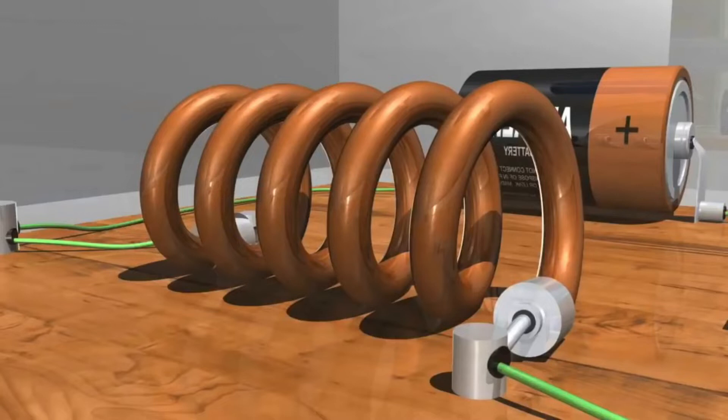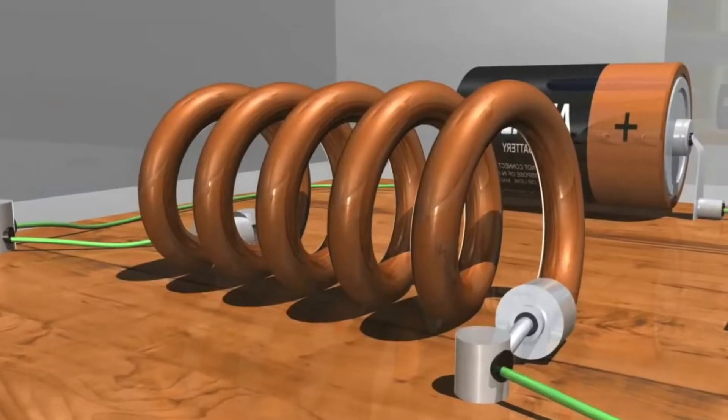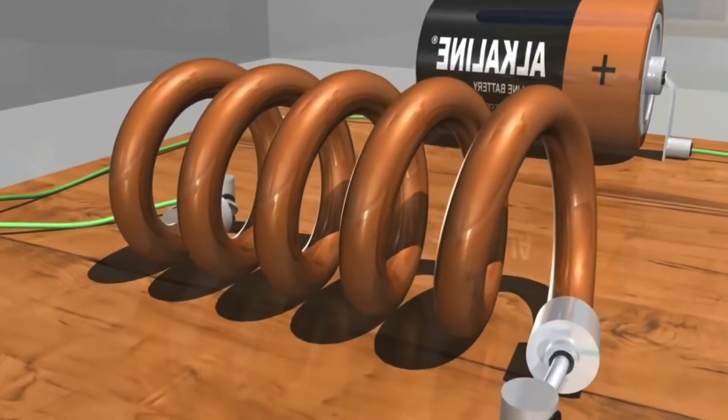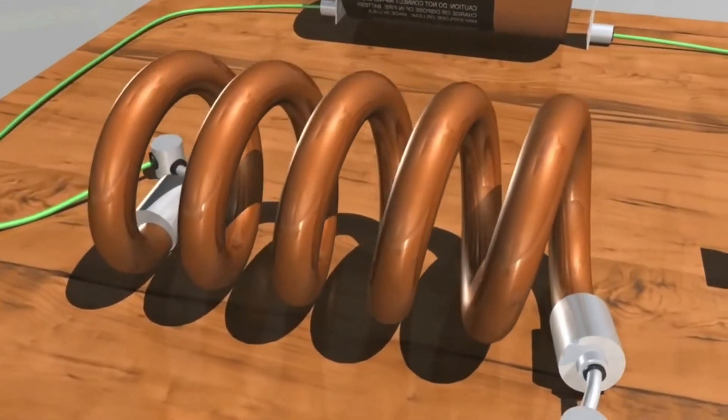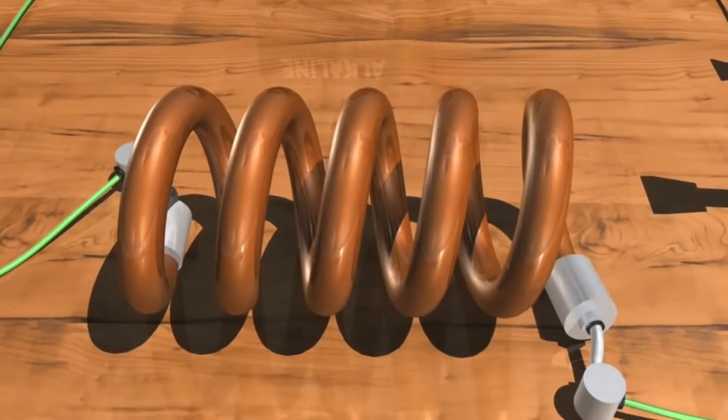Inductors store energy in the form of magnetic fields that are generated around them when a current passes through them. They are called inductors because they induce a voltage in their coils when that magnetic field changes. We will see this in a minute.